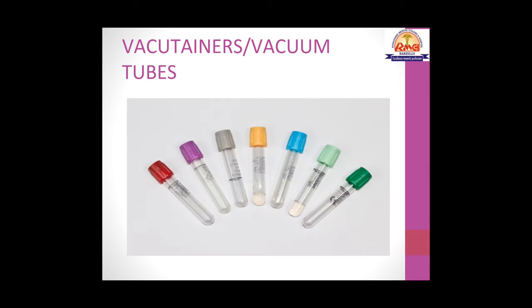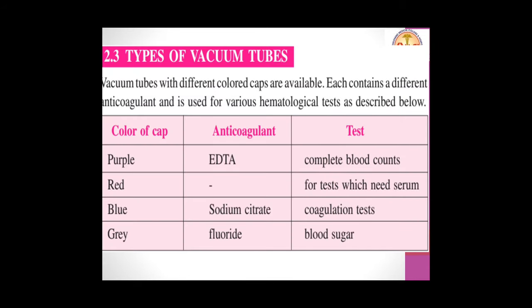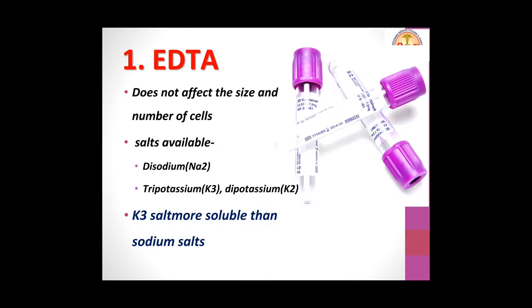Vacutainers, also known as vacuum tubes, contain a small amount of vacuum that helps draw the blood sample. They have different color codings because they contain different additives and anticoagulants. The purple cap vacutainer contains EDTA (ethylenediaminetetraacetic acid). EDTA is a useful anticoagulant because it does not affect the size and number of blood cells, making it suitable for hematology procedures.